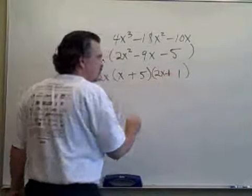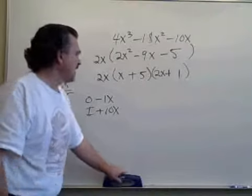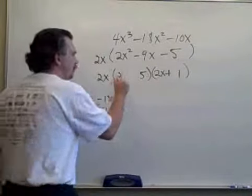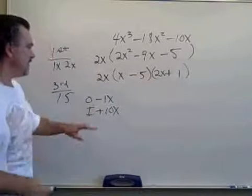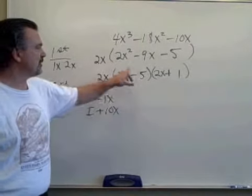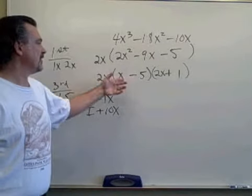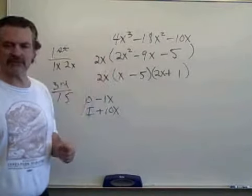So this one needs to be 2x plus 1. And this binomial needs to be x minus 5. Now if I looked at the O and the I of FOIL, it would produce minus 9x for me just as I need. There's my complete factorization of that trinomial.